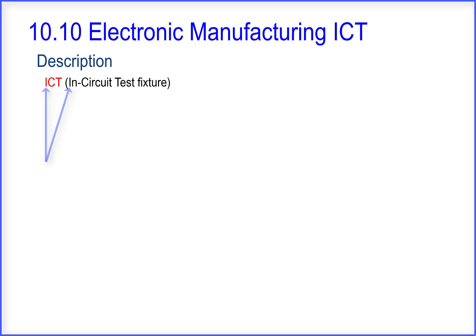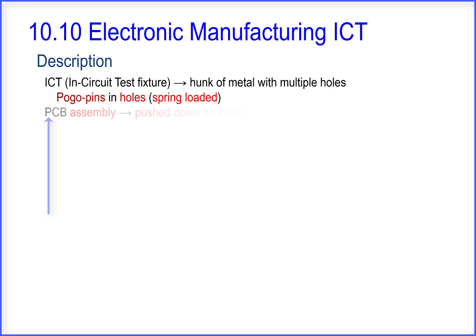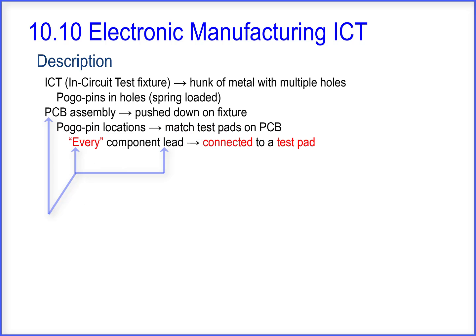ICT, which means in-circuit test fixture, is a hunk of metal with multiple holes. There are pogo pins in the holes, and the pogo pins are spring-loaded. A PCB assembly is pushed down on the fixture. Pogo pin locations match the test pads on the PCB, and every component lead is connected to a test pad.